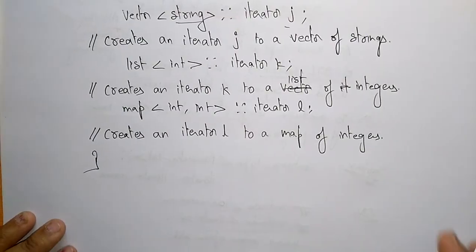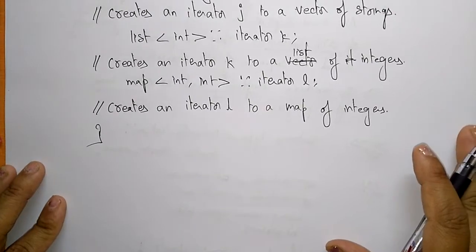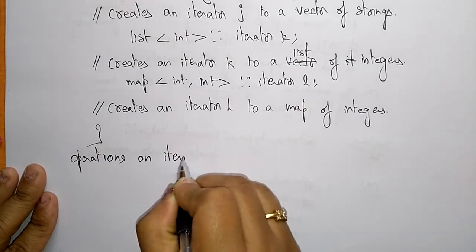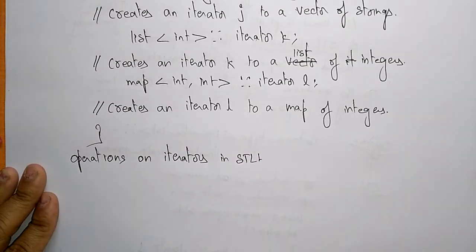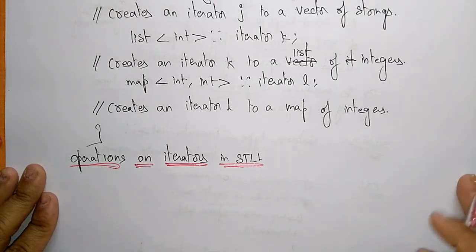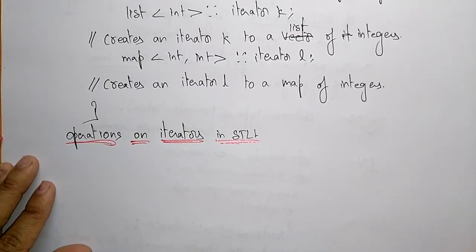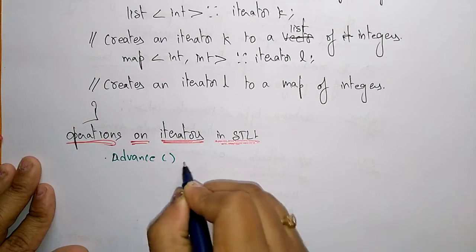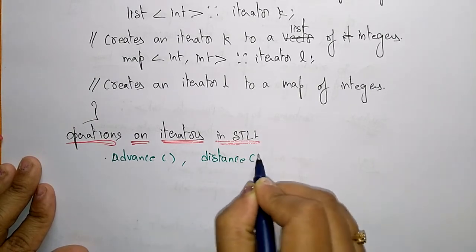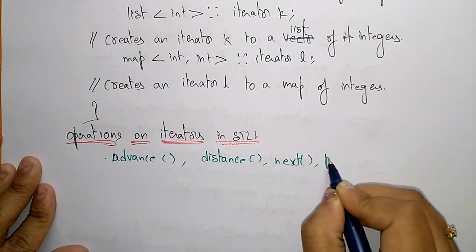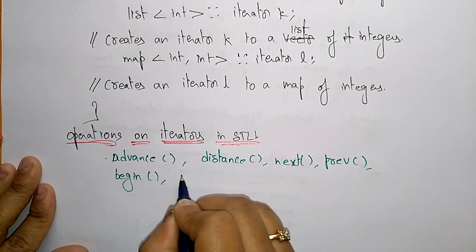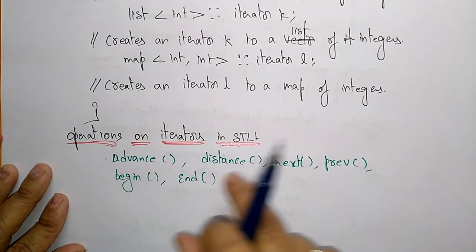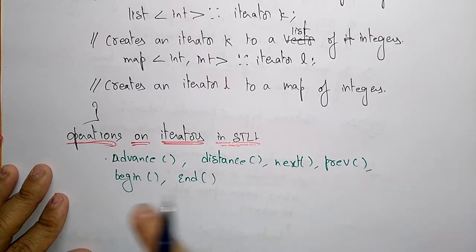Now let us see the different operations that can be performed on iterators in the Standard Template Library. The different operations are: advance, next, distance, previous, begin, and end. Let us see each operation — what advance does, and what distance, next, previous, begin, and end do, with examples.